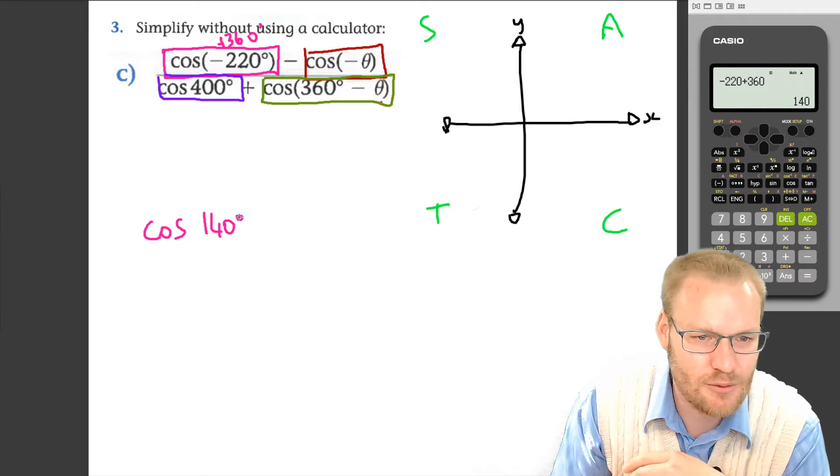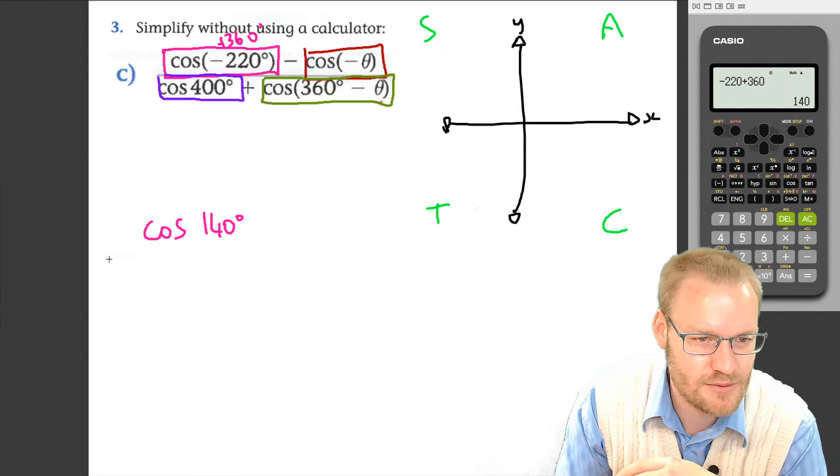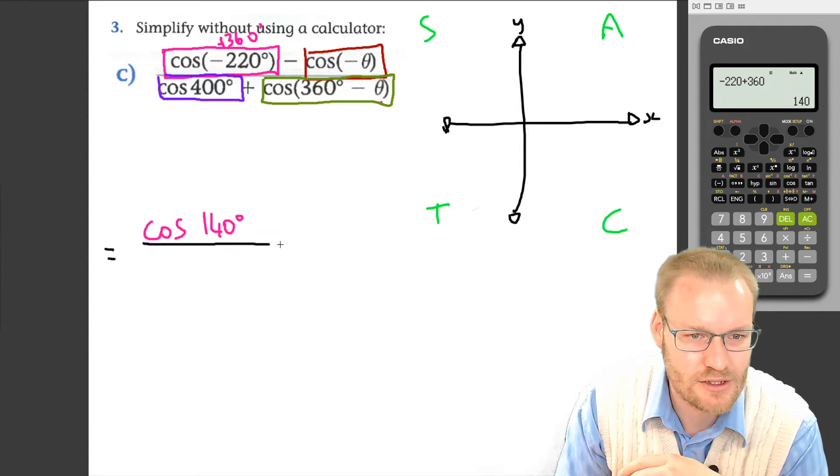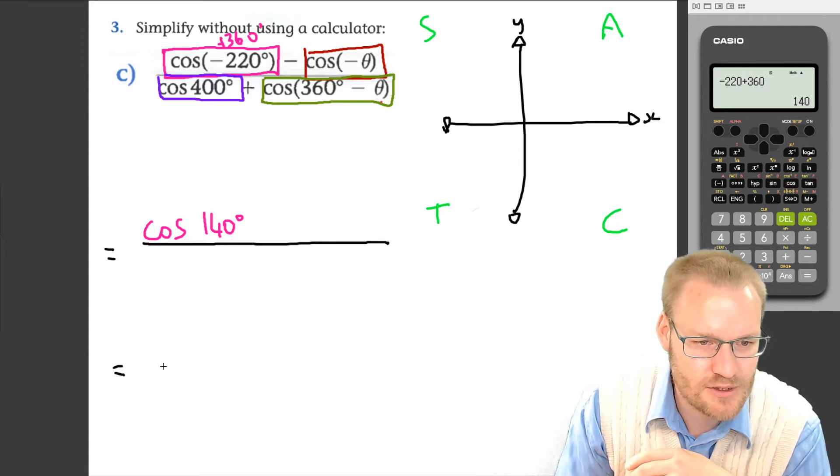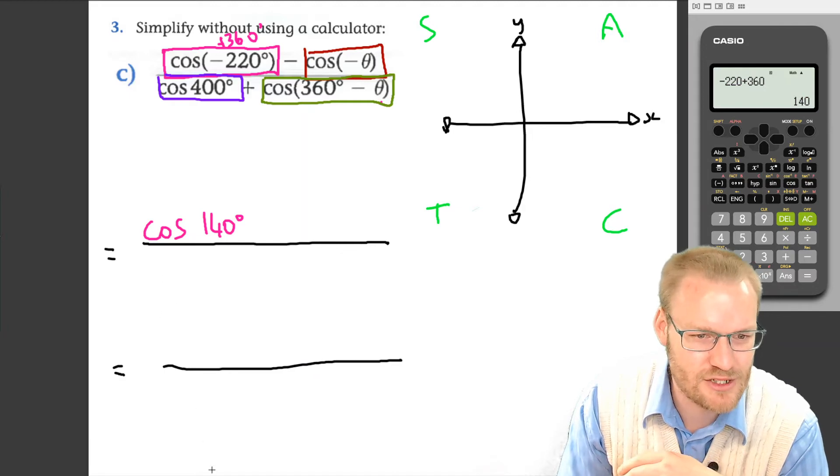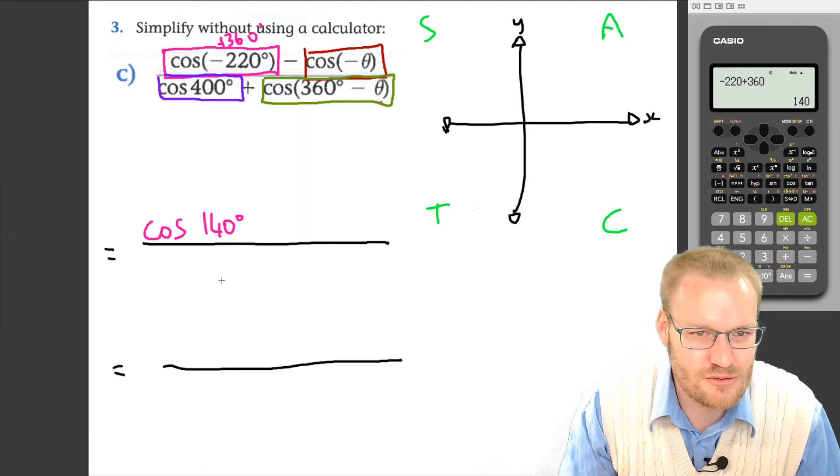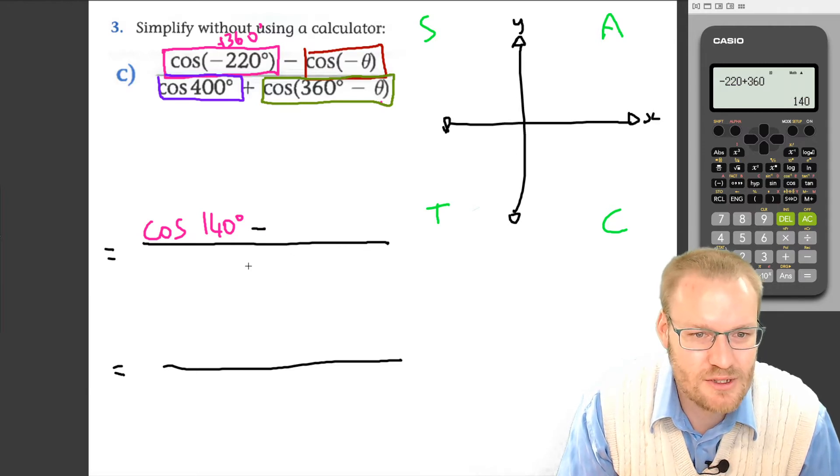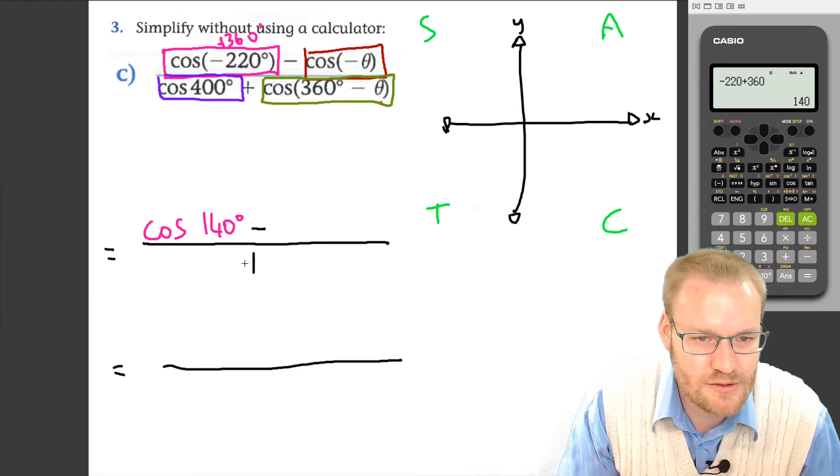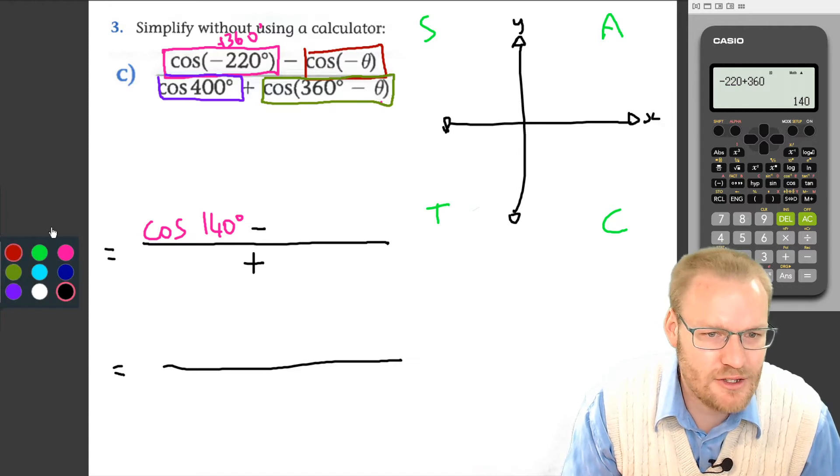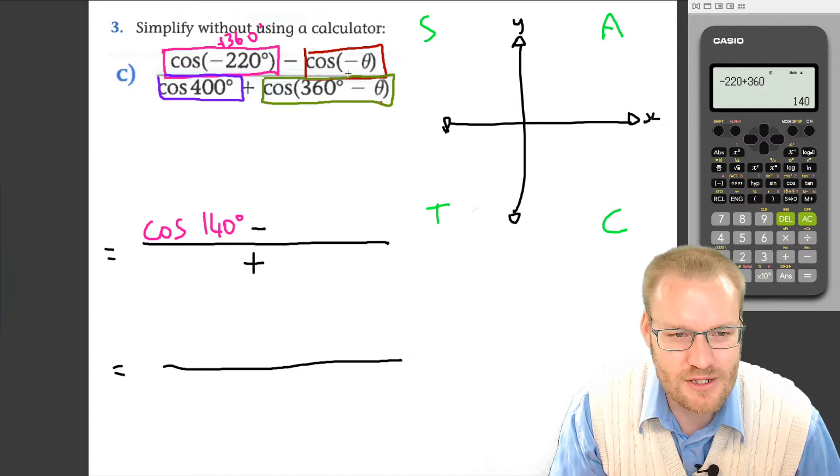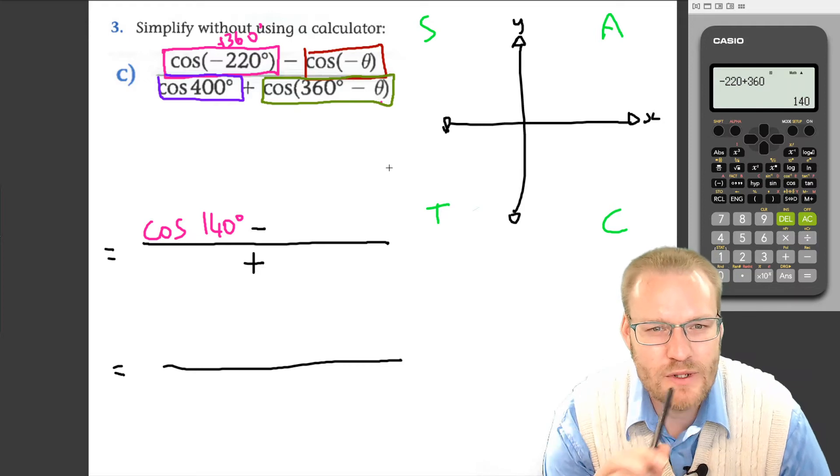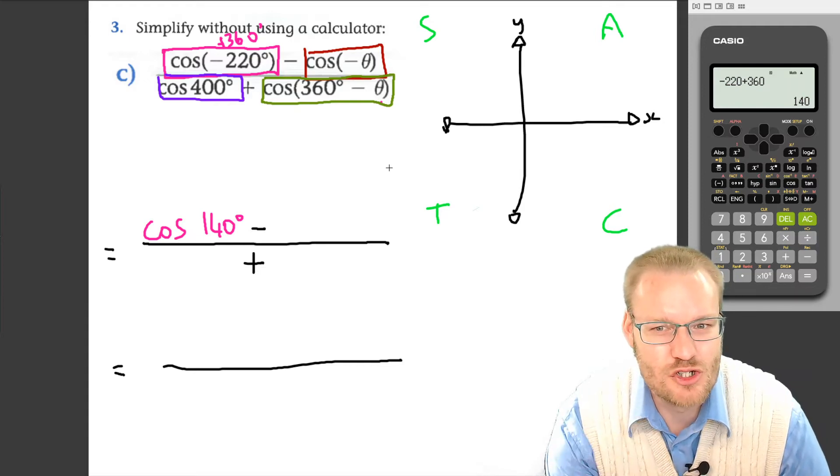So cos(-220°) plus 360, that's equal to cos(140°). We're going to have to reduce that in the next step, so I'm going to write equals—there's going to be a fraction. Then there's a negative, so we're going to subtract. The bottom there was a positive, so let's get that ready. The maroon part: cos(-θ). Let's stick to our strategy we've been doing.